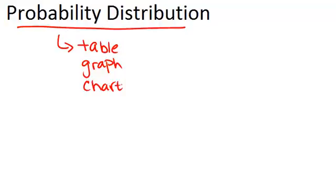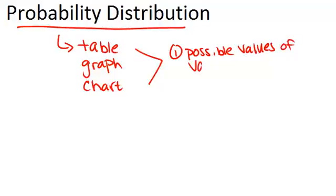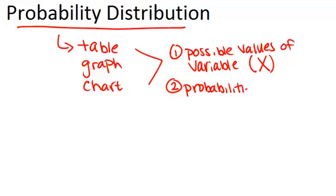But the key things that it has to show are the possible values for the variable that you're talking about, your random variable. And remember that your random variable is usually denoted by the letter X, capital X. And it also has to show the probabilities for each of those possible values.